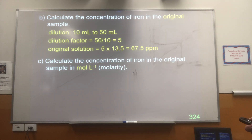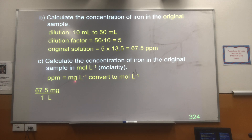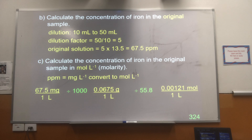Next we need to turn that into a molarity — from our work on units of concentration, we're converting parts per million into moles per litre. Parts per million in solutions usually means milligrams per litre, so we turn milligrams per litre into moles per litre. That means milligrams to grams by dividing by 1000, then grams to moles by dividing by the molar mass. It's an iron solution, so the molar mass is 55.8, and that gives us our molarity.